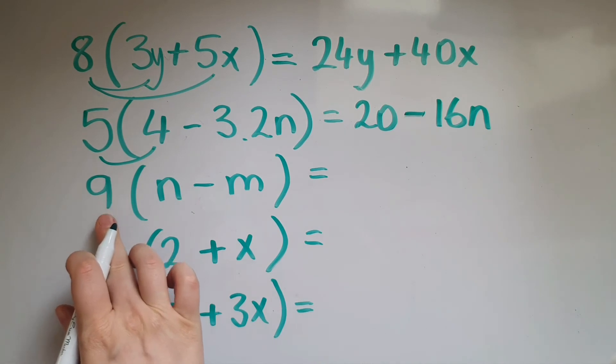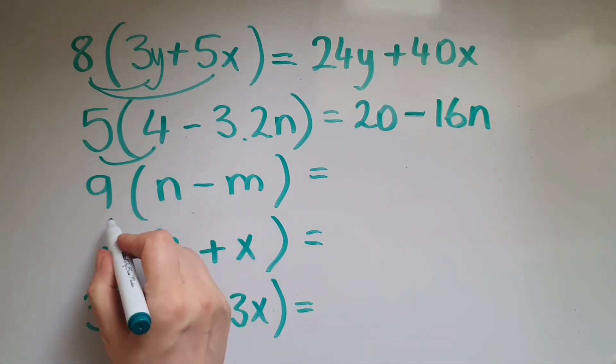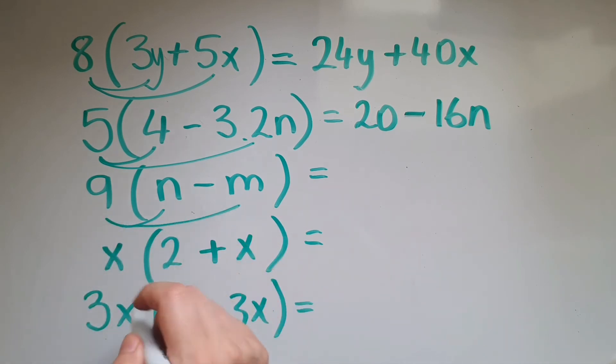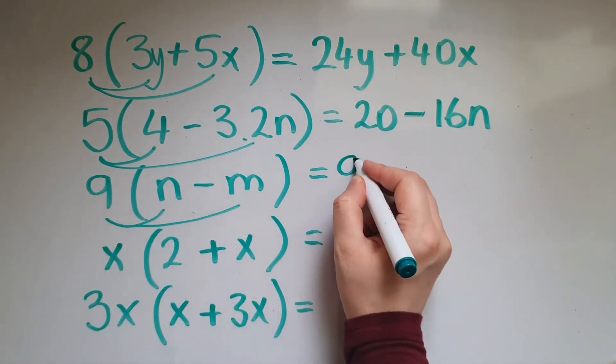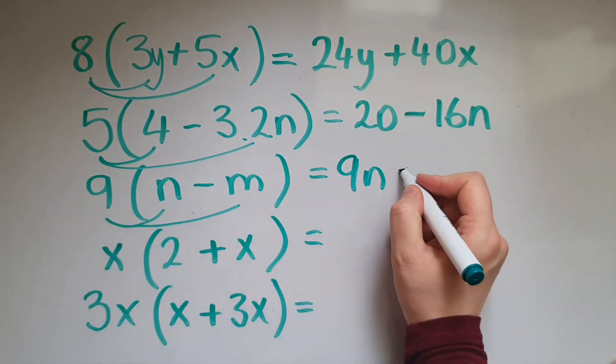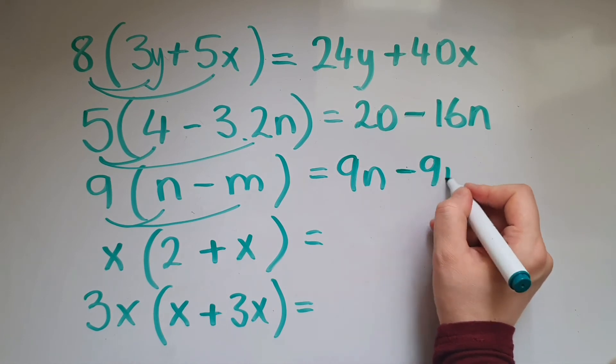Looking at this one, we're going to do 9 times n and then 9 times negative m. 9 times n is 9n. 9 times negative m is negative 9m.